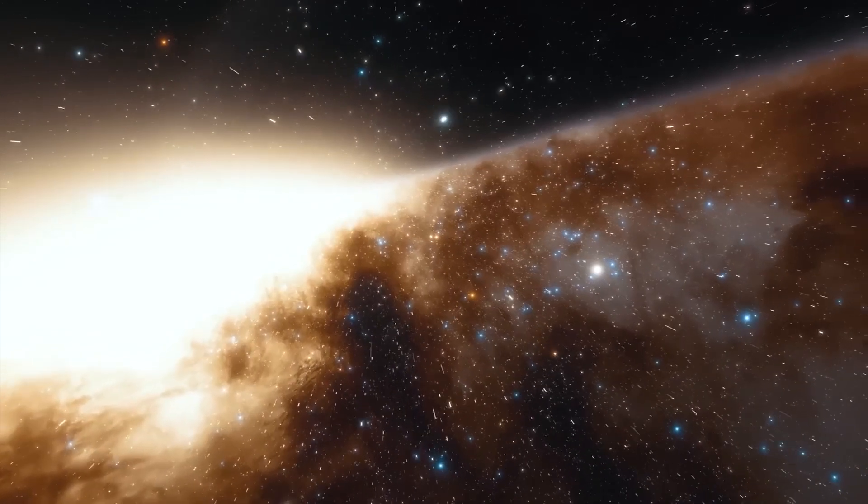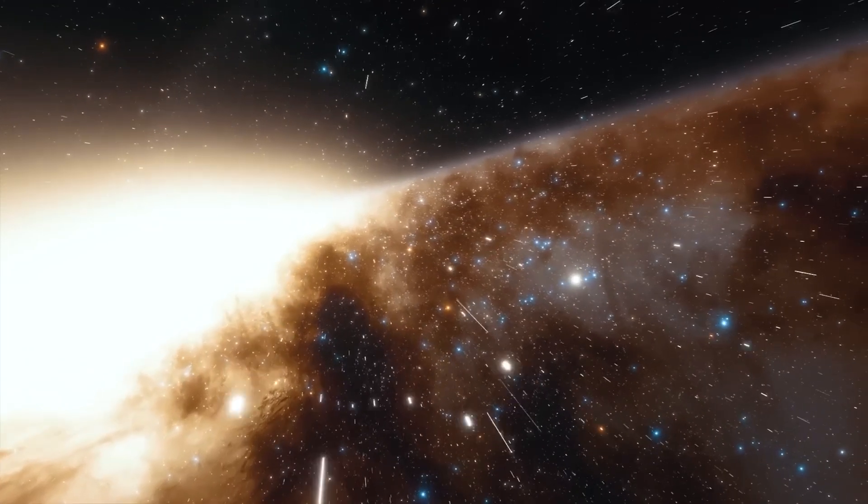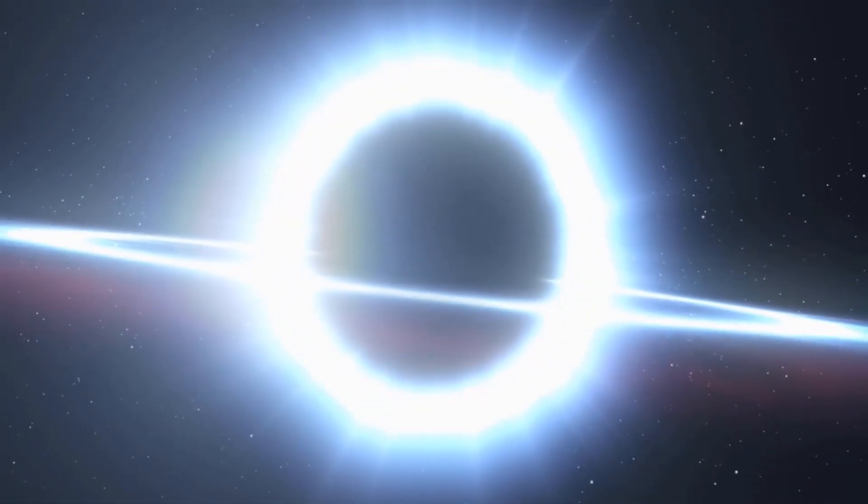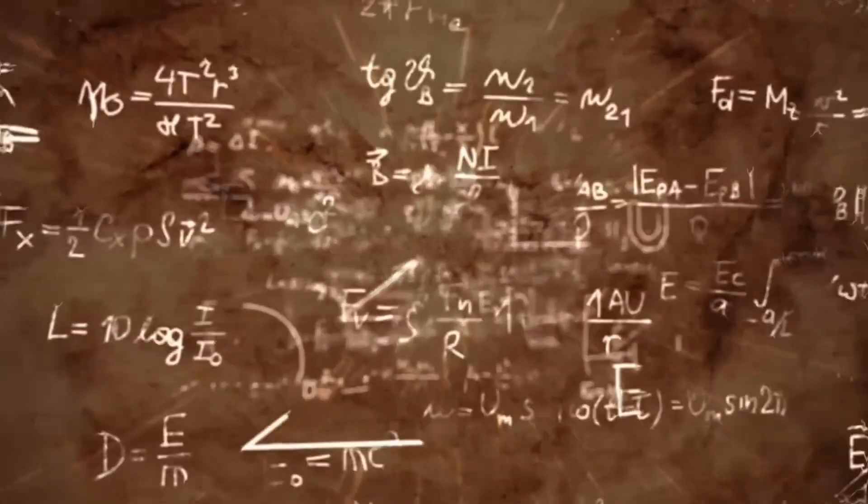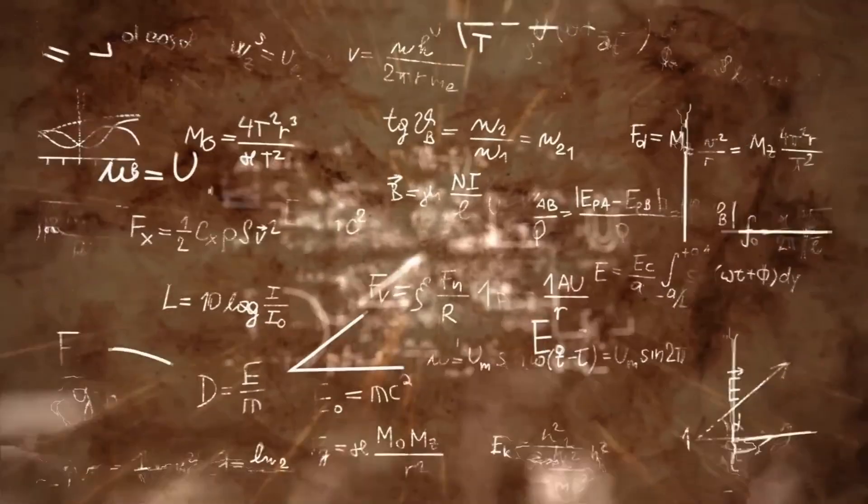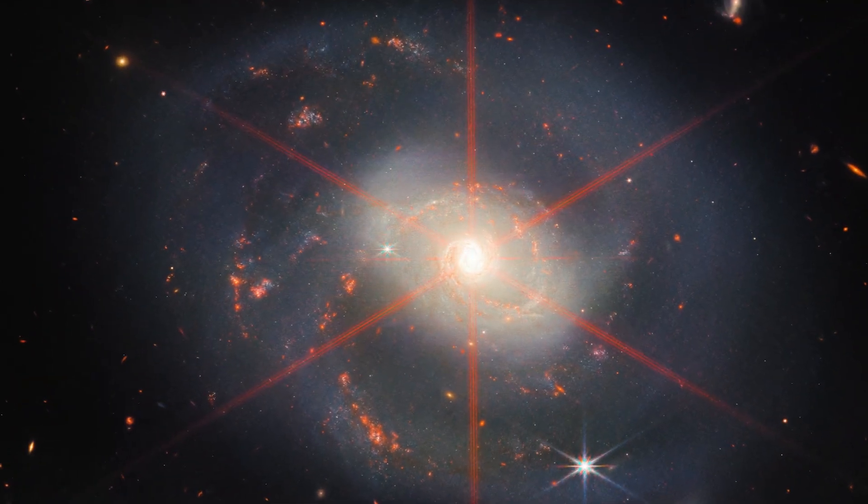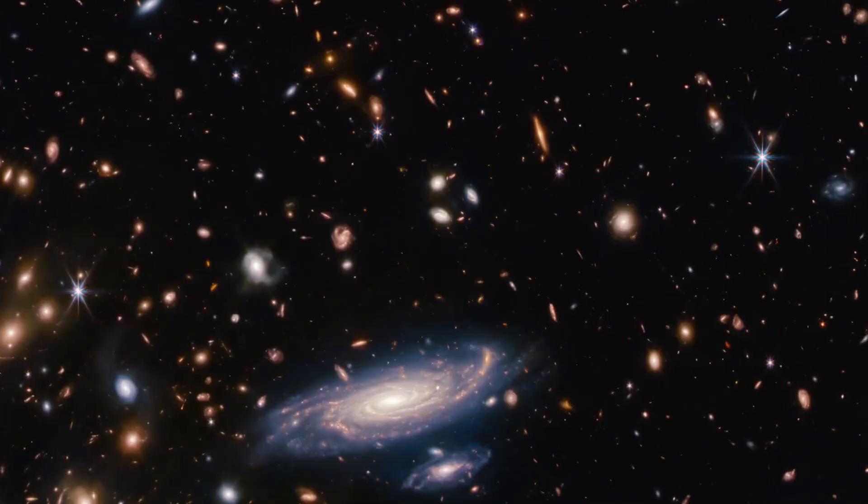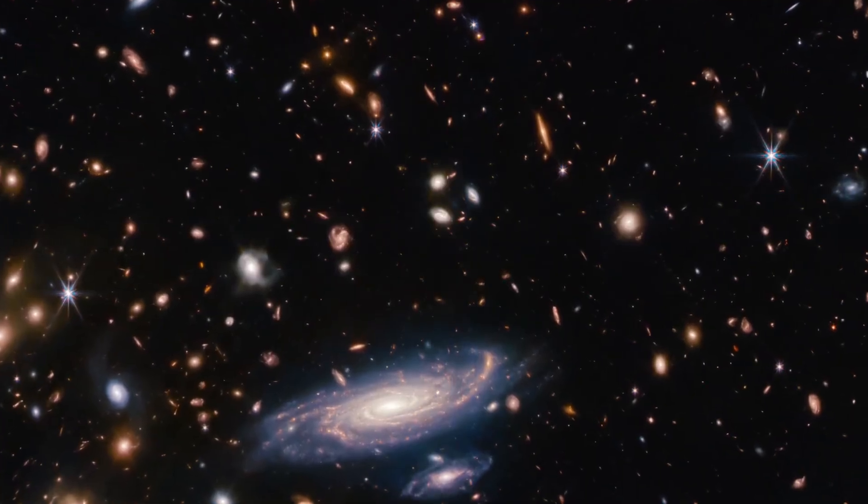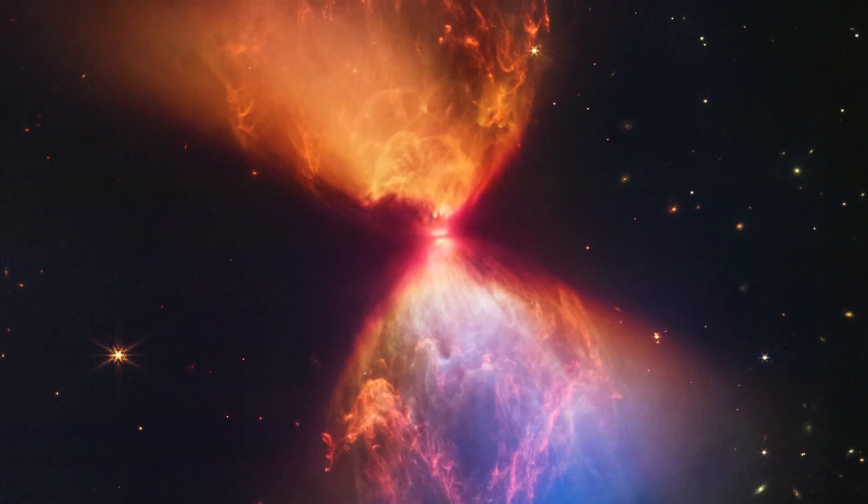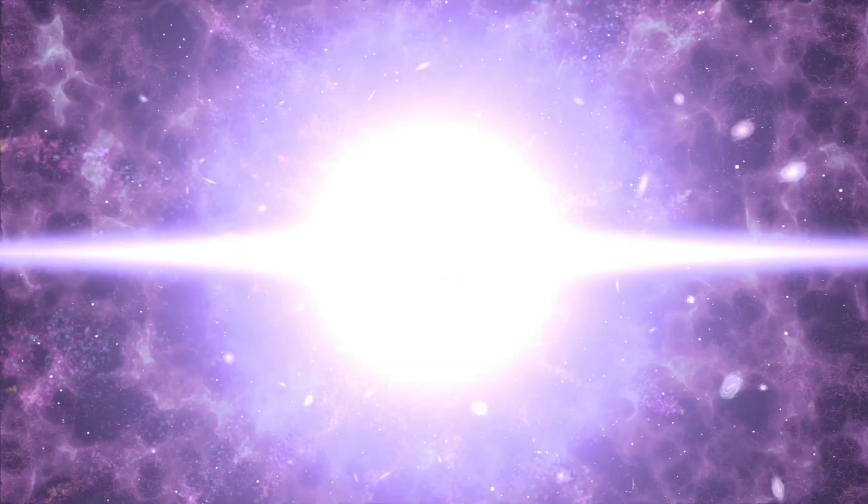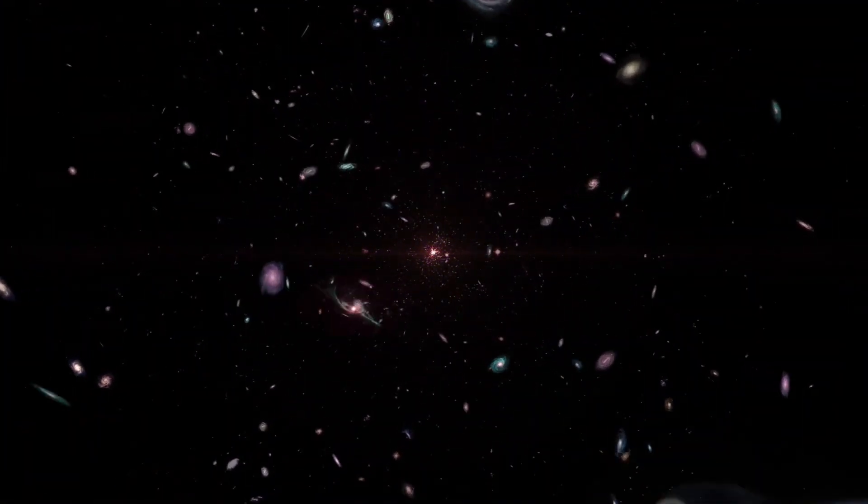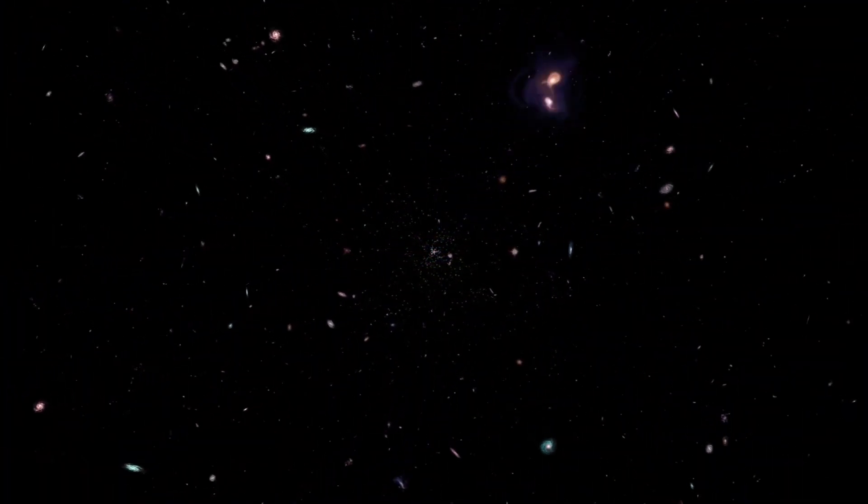Moreover, the smoothness of these galaxies is totally unexpected. According to the Big Bang Theory, galaxies should show irregularities and variations in their structures due to the dynamics of their formation and evolution. However, the images reveal unusually smooth galaxies without the level of complexity and roughness that one would normally expect to see in galaxies of their age. This defies the expected time sequence for the formation and evolution of galaxies within the framework of the Big Bang Theory.